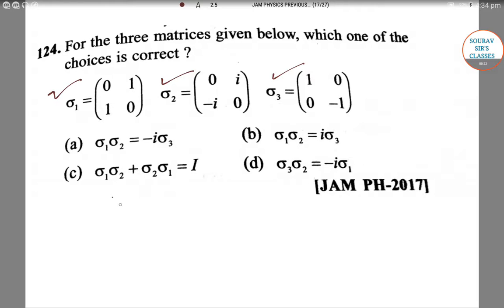So Sigma one Sigma two equals: zero one, one zero times zero i, minus i zero.